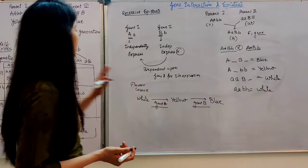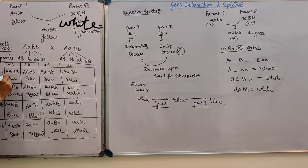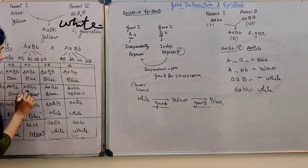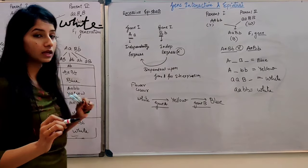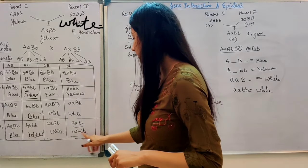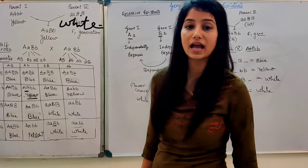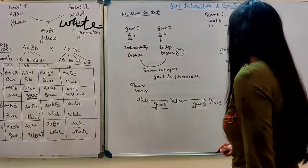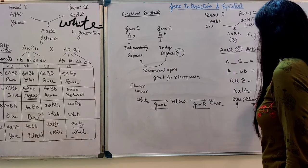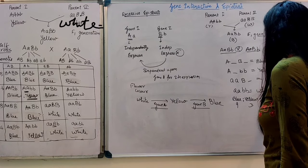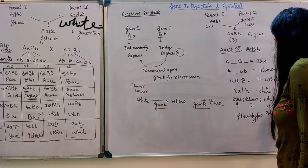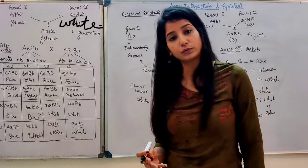So the results are: capital A and capital B present — blue color; only capital A present — yellow color; only capital B present — white color; both absent — white color. The phenotypic ratio of recessive epistasis is 9 blue : 3 yellow : 4 white, which is the 9:3:4 ratio.